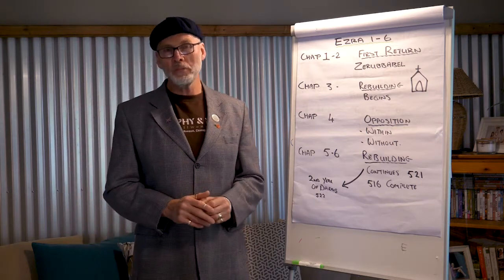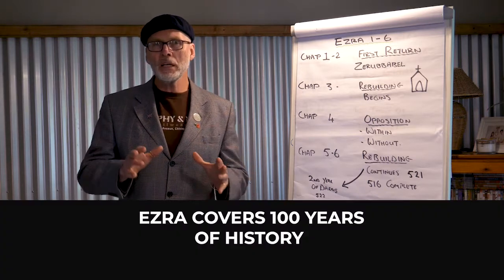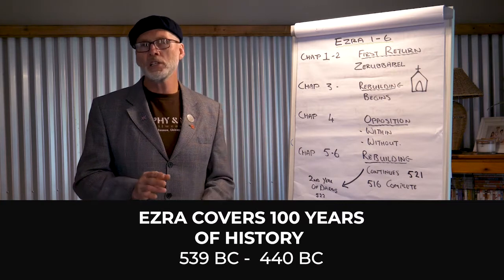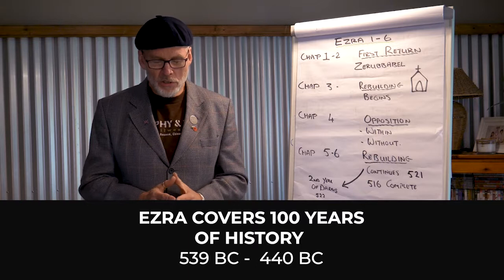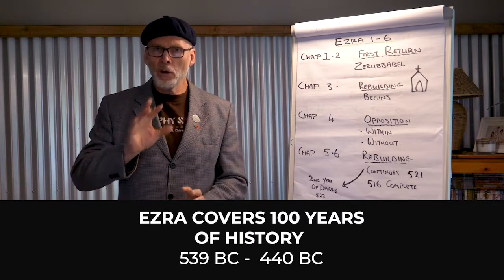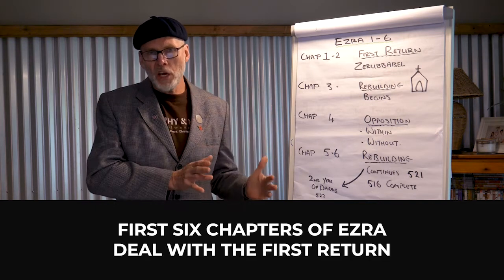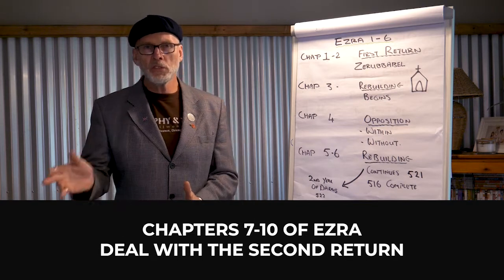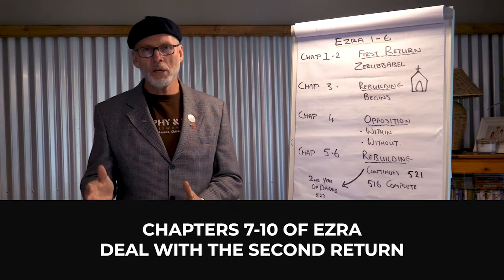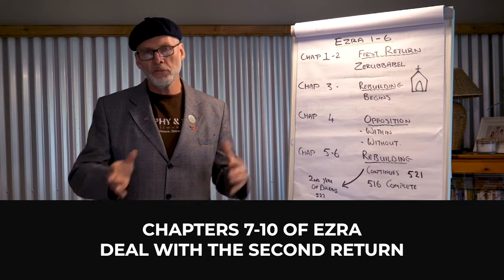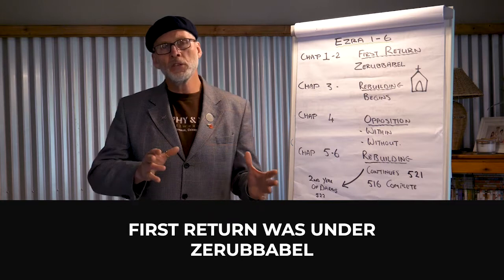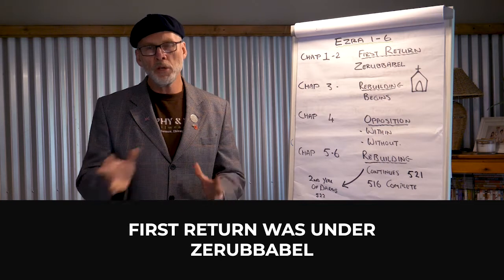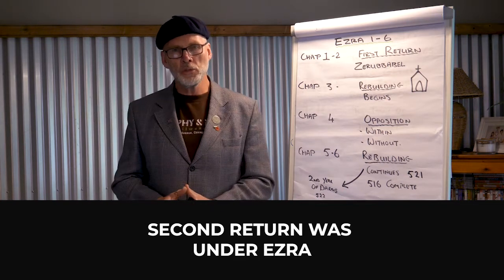Ezra covers about a hundred years of history from 539 BC to about 440 BC. It's very clearly a book of two parts: the first six chapters deal with the first return, and chapters 7 to 10 deal with the second return. The first return happens under Zerubbabel, and the second return from chapter 7 deals with Ezra returning — as you'll remember from the previous two weeks.